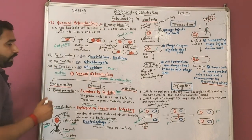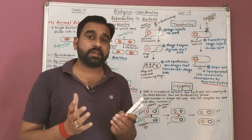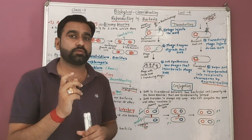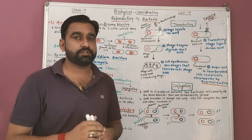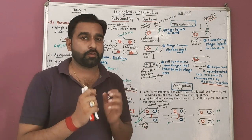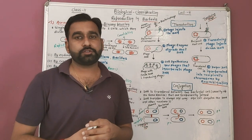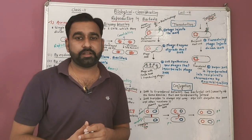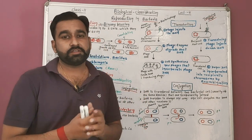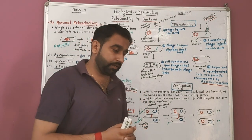In bacteria, two types of reproduction are present: asexual reproduction as well as sexual reproduction. But in bacteria, true sexual reproduction is not present — it is also called genetic recombination. Because gamete formation is not present in bacteria, it is not called true reproduction. Genetical recombination is present in bacteria.